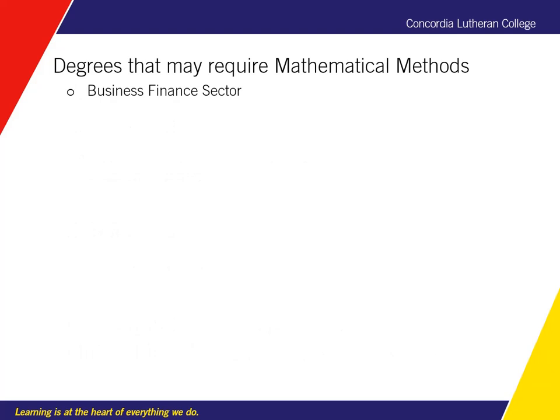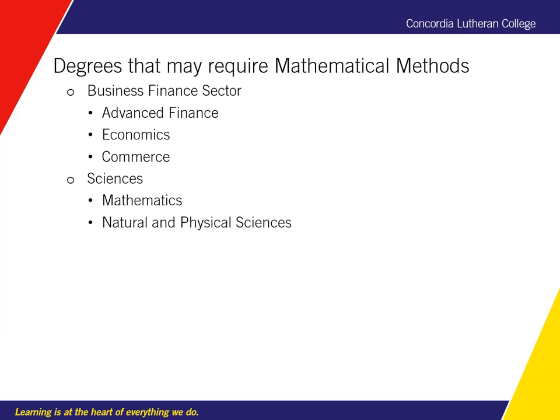One of the areas we look at for mathematical methods is the degrees that may require it. In the business and finance sector, if you want to study an advanced finance degree, economics or commerce, these may require that you have done mathematical methods. In the sciences, there are far more degrees that require this — essentially every degree with 'science' attached. Specifically, mathematics as a pure degree, natural and physical sciences, medical and health sciences, computer sciences, or psychology will almost definitely require mathematical methods, regardless of the university you choose.